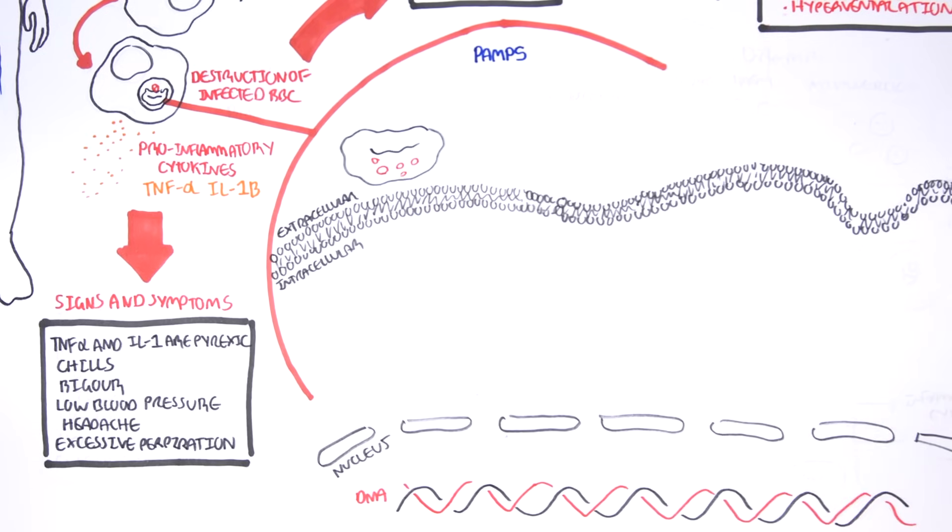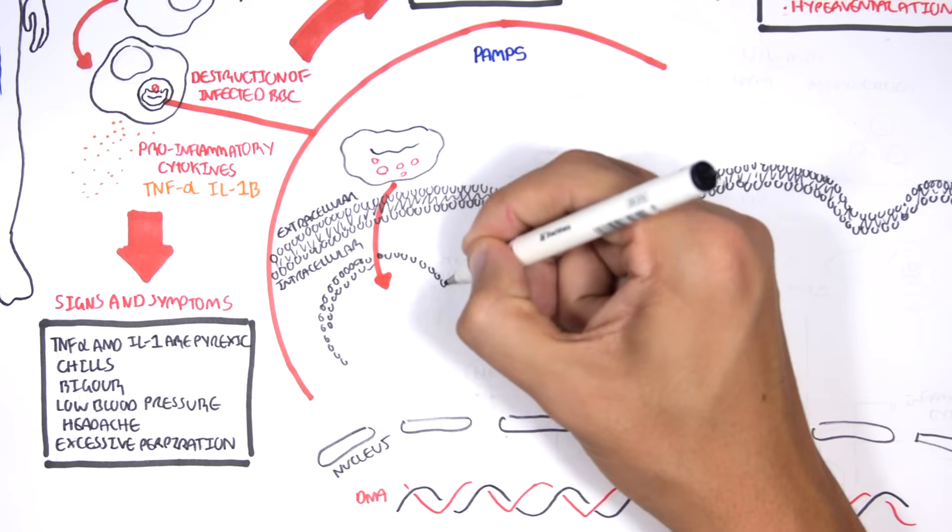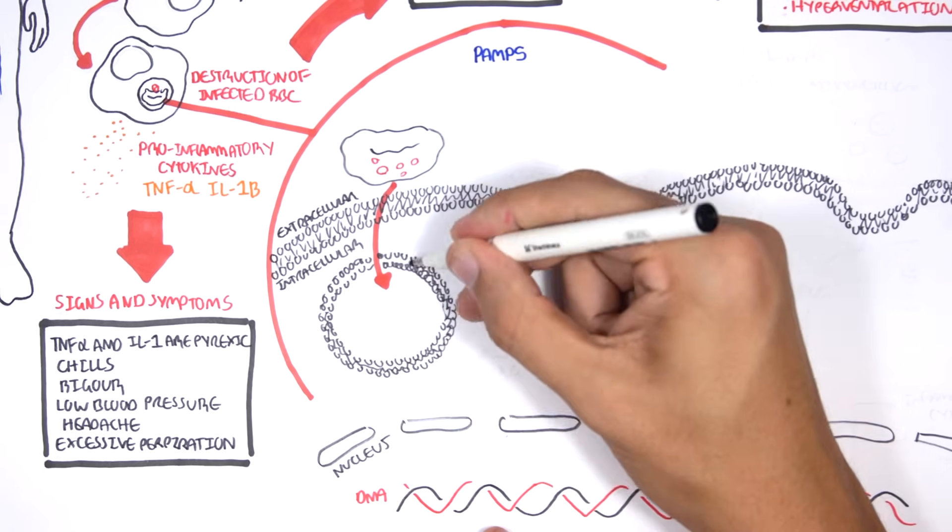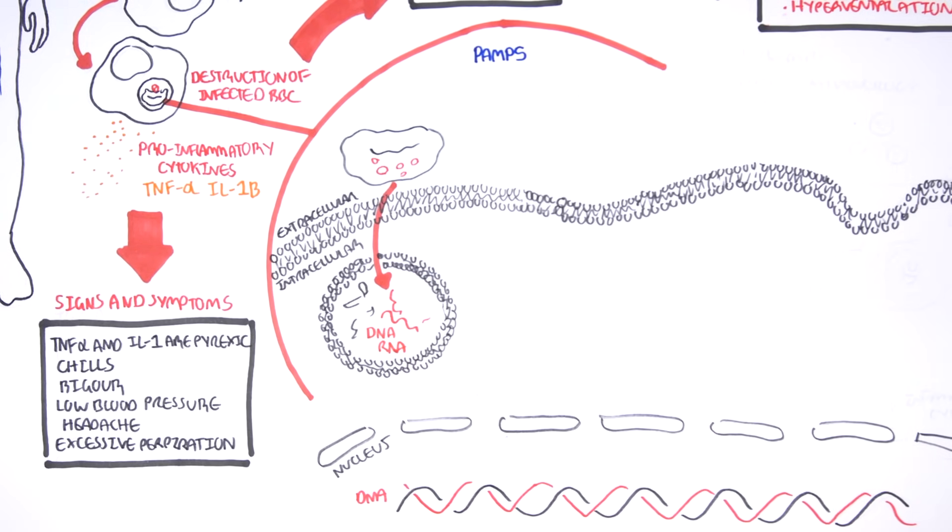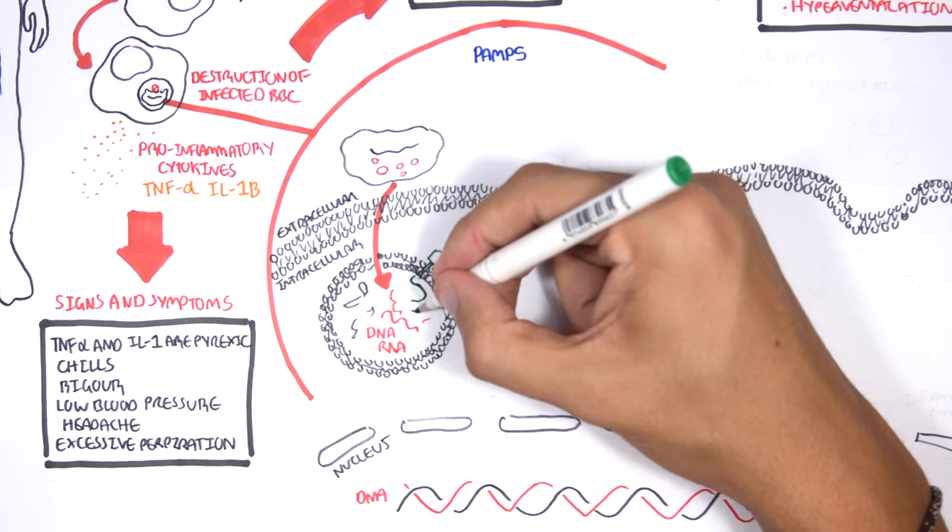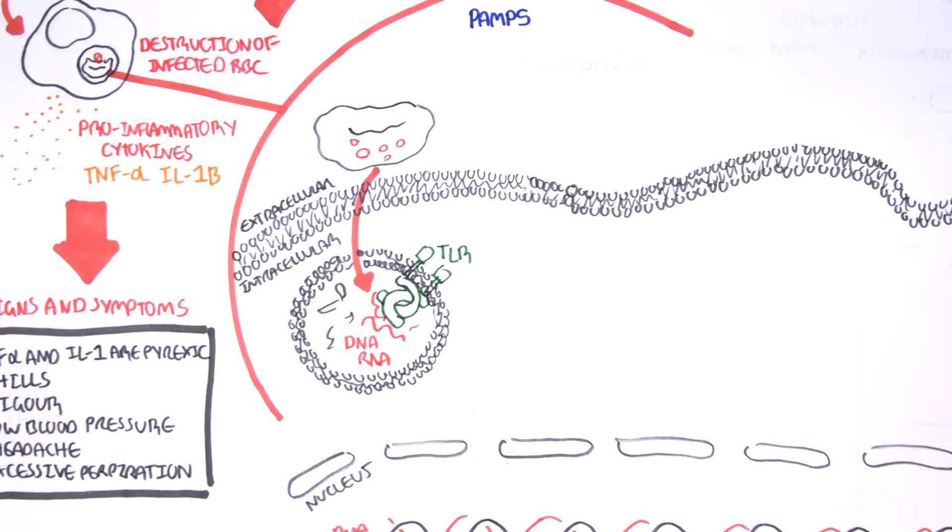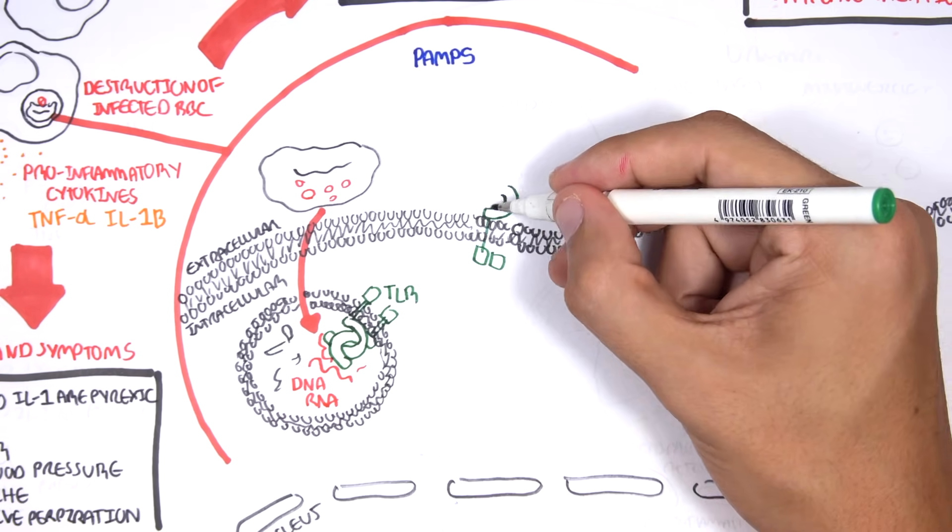The red blood cell can be ingested by the macrophage in the spleen, right? And as a consequence of phagocytosis, the genetic material of the parasite is released. The genetic material is a pathogen-associated molecular pattern. And can be detected by toll-like receptors, which are receptors, important receptors in the innate immune system.